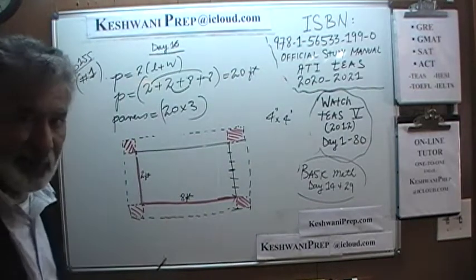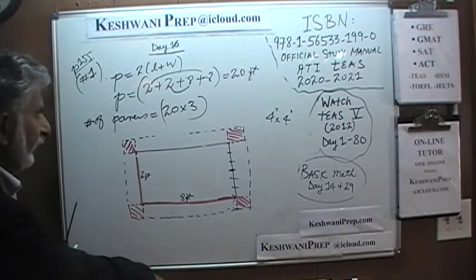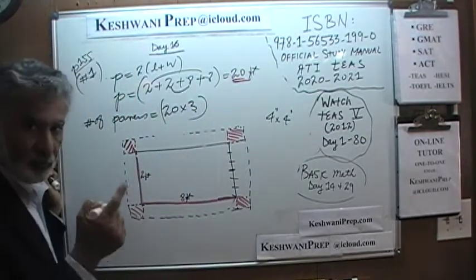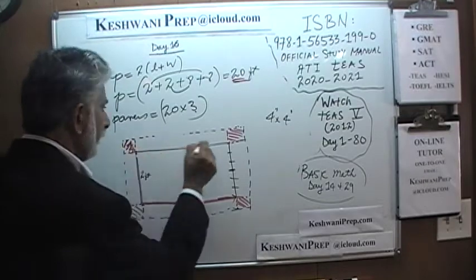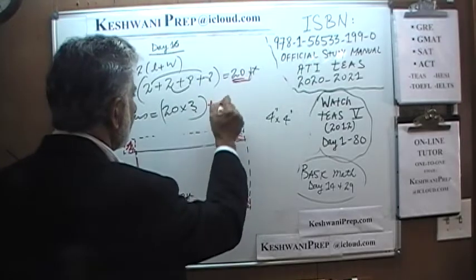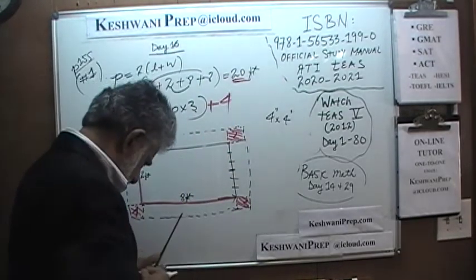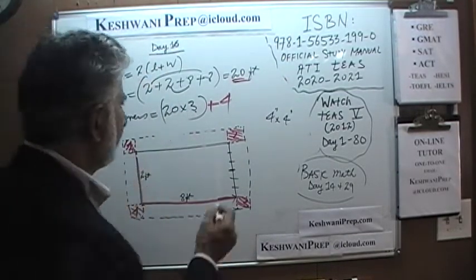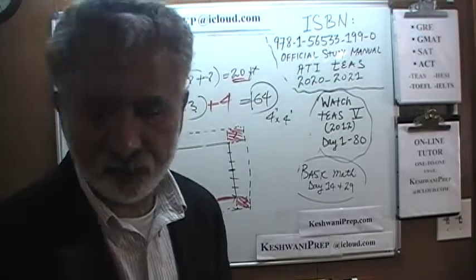So the number of pavers we need is 20 feet of perimeter times 3 pavers per foot, which gives us 60. But that is not the end of the story — we must also add the 4 corner pavers. So 20 times 3 is 60, plus 4 is 64. The answer is 64 pavers.